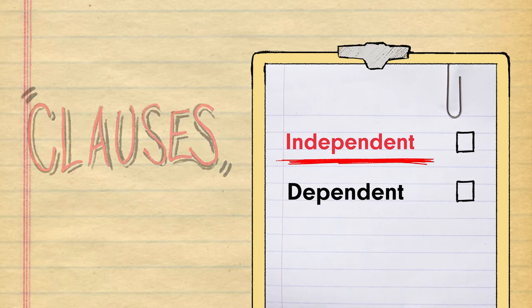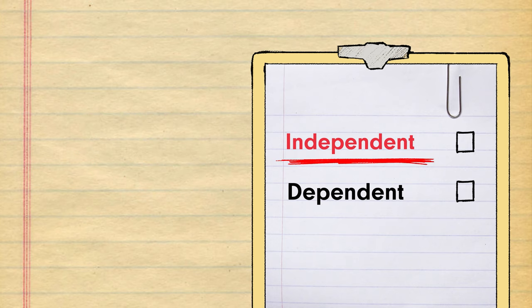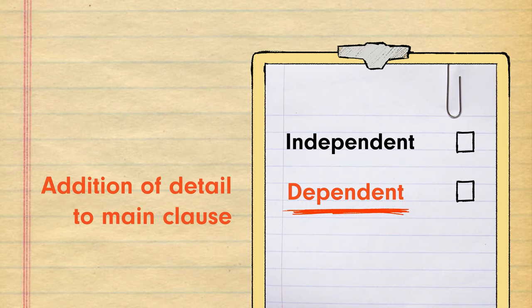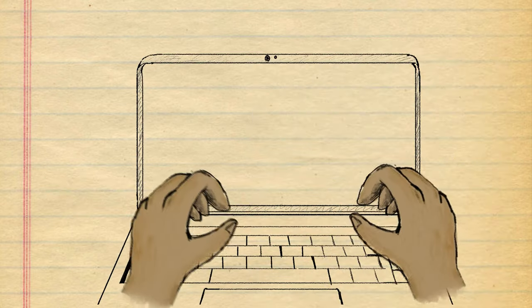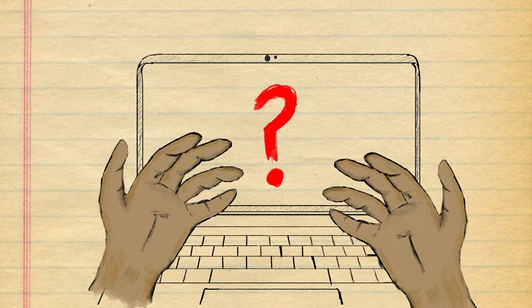An independent clause is a clause that makes sense without any other information surrounding it, whereas a dependent clause is the addition of detail or information onto the independent clause. So, how do we use these clauses to form sentences?